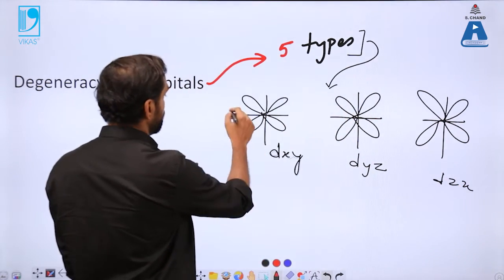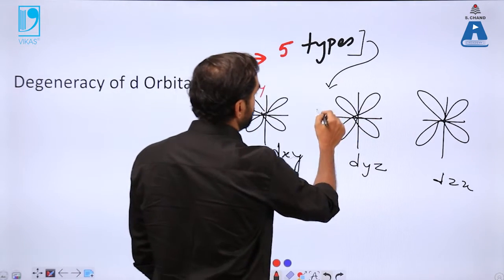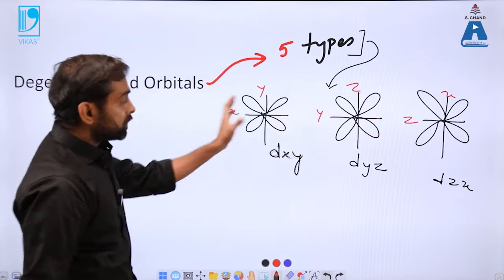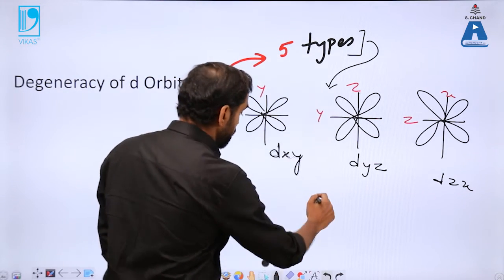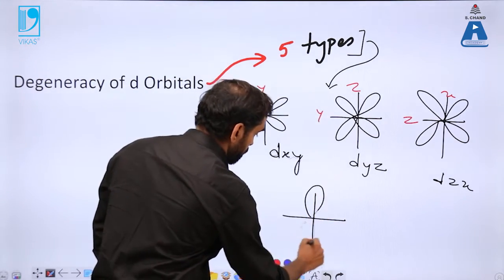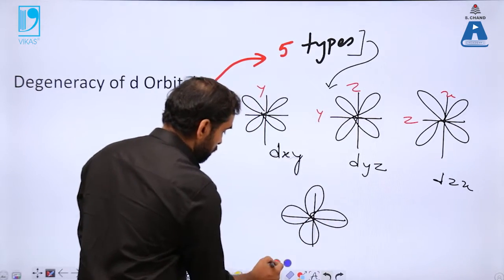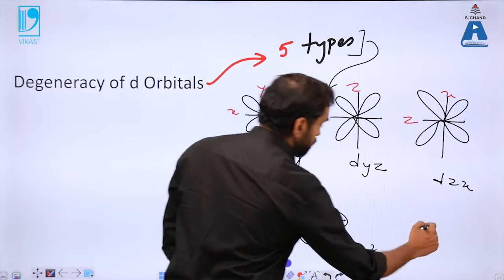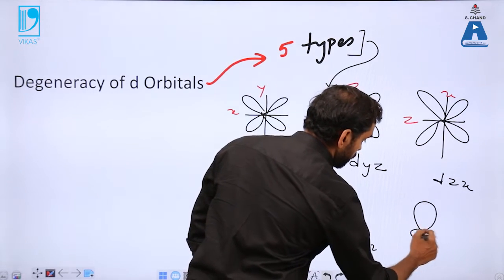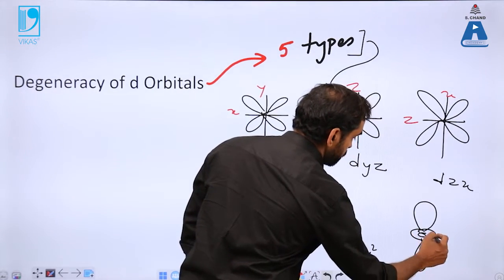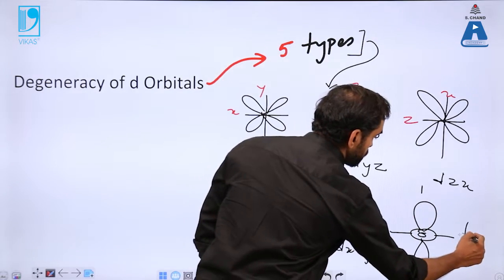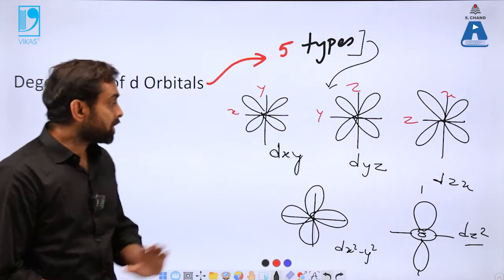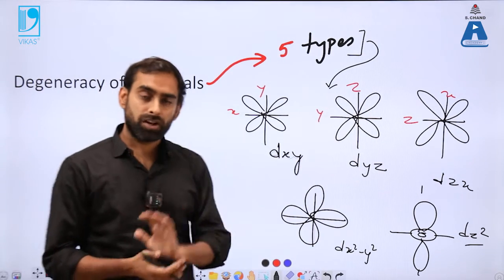Remember that the axes are different: here it is x and y, here it is y and z, here it is z and x. So these are three different d orbitals and then there are two more. You have d x square minus y square and you have another one that has slightly different shape, which is called d z square.